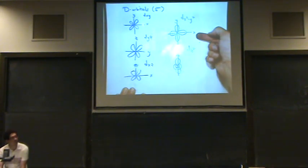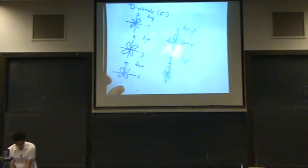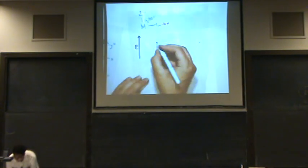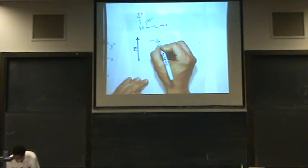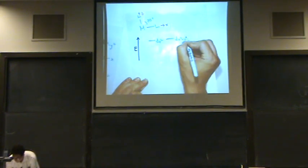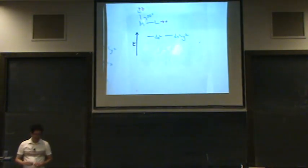And equally, the dx-squared minus y-squared is on the x-axis, so that will be a high energy. So I'm going to draw that out first. So those are the highest energy, and those are the ones on the axis.